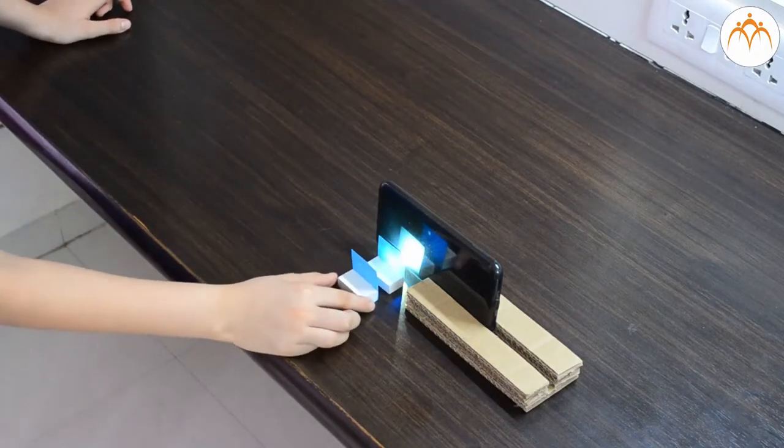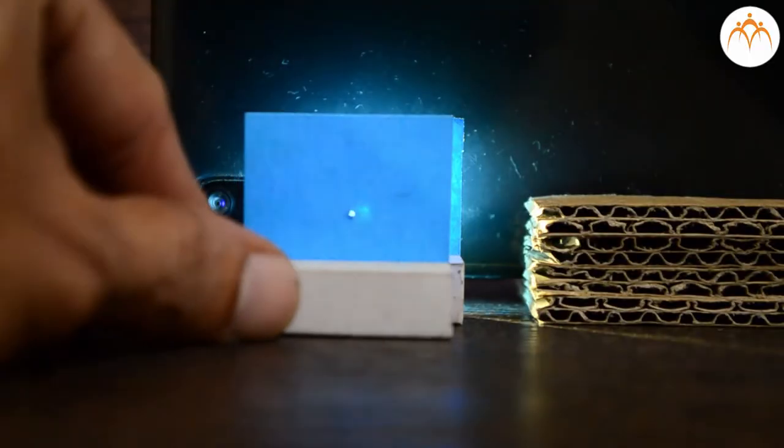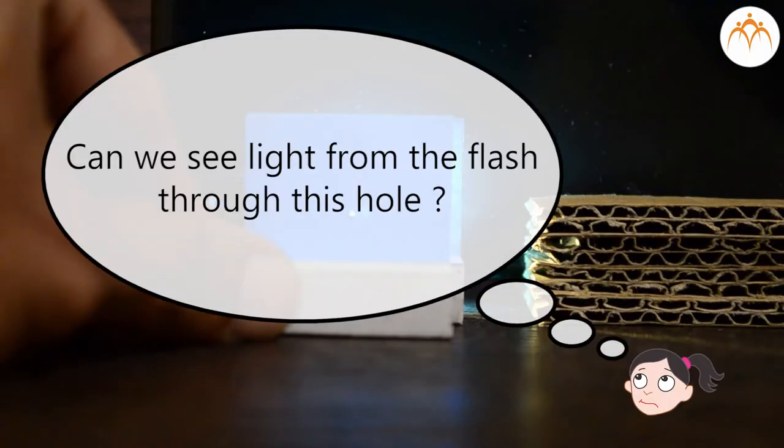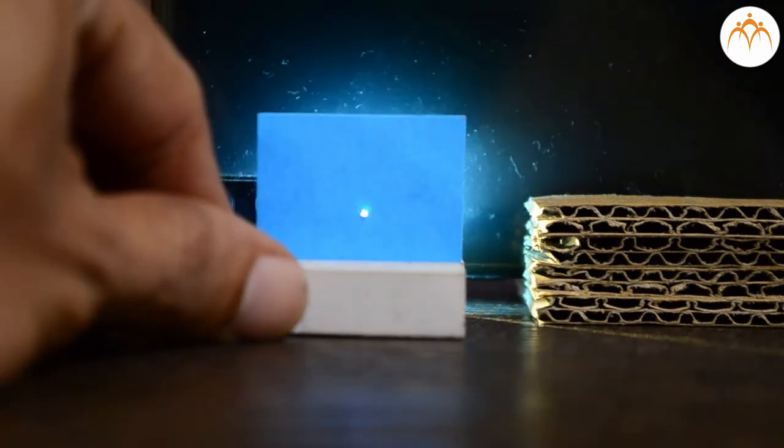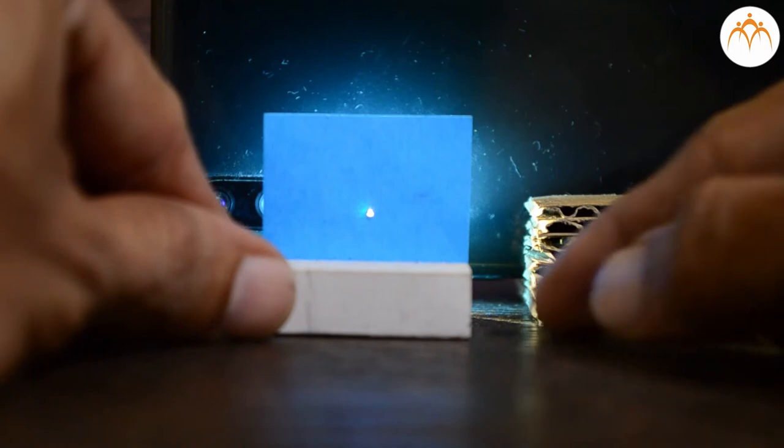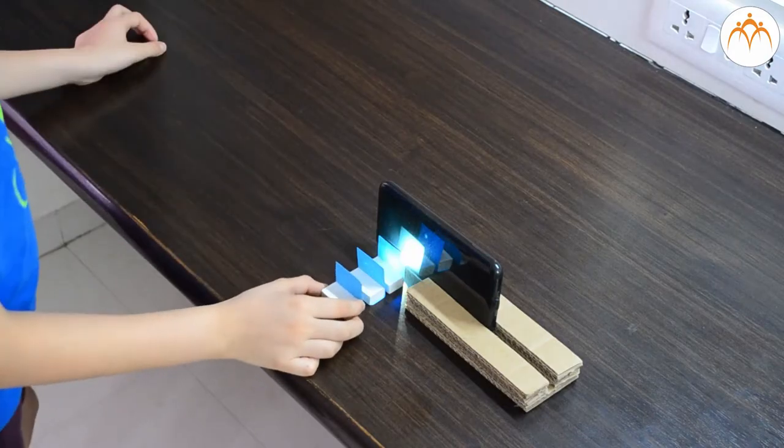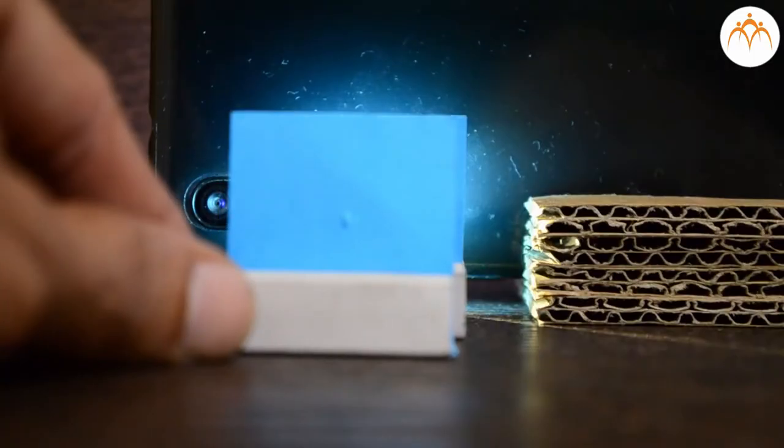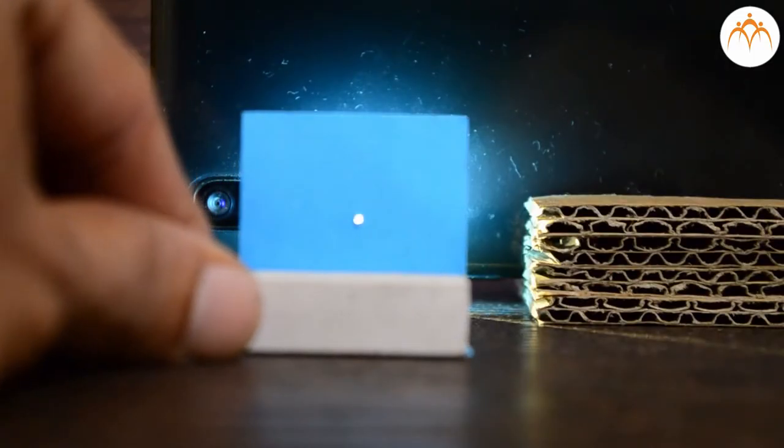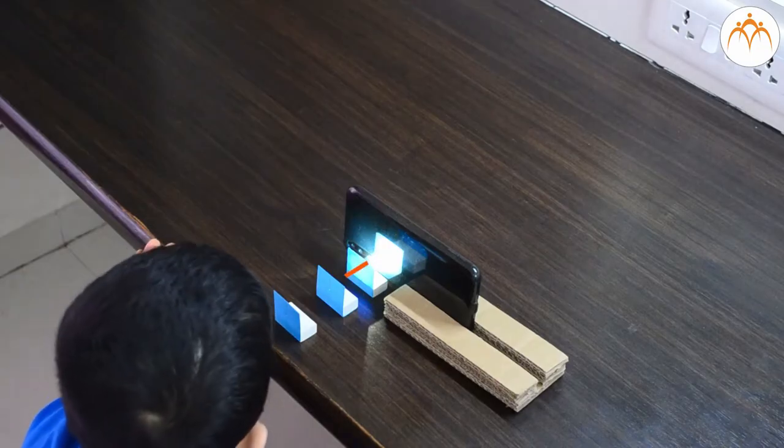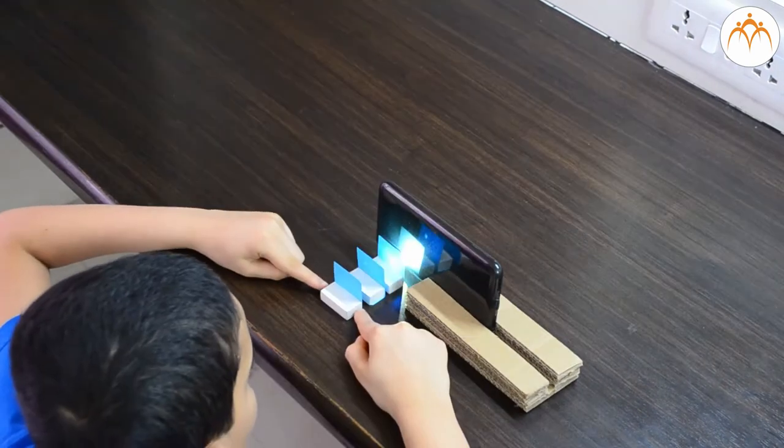Now let us place a second eraser here. Can we see light from the flash through this hole? No, we'll have to adjust it. Let's move the eraser till we see the light through the hole. How about the third one? We have to follow the same process.